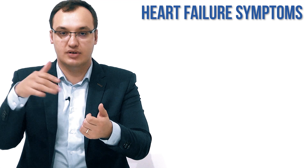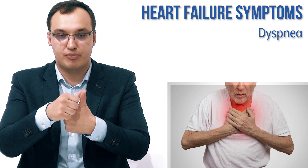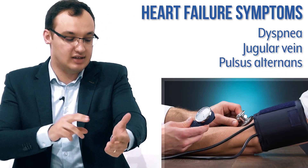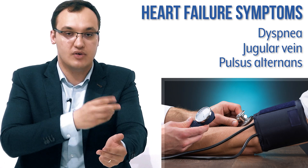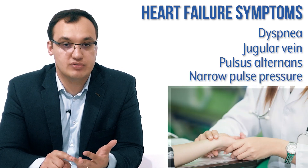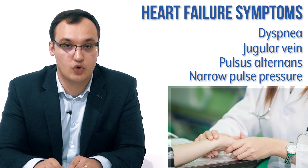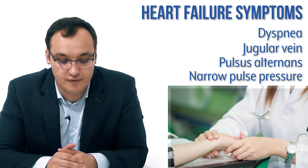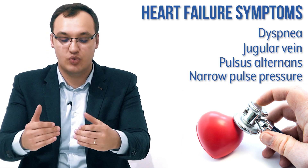Let's make a quick summary. We have dyspnea — difficulty breathing. We have elevated internal jugular venous pressure. We have pulsus alternans — the pulse alternating in strength when we release the cuff and start hearing the weak sounds. And we have pulse pressure less than 25, whereas normally it's around 40 because 120 minus 80 is around 40. These are very typical signs of heart failure, but there are many more.